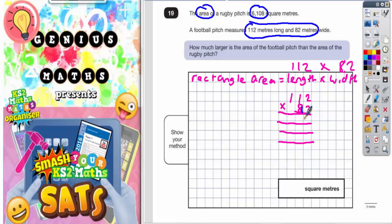First thing you do, you start with the two. Two twos are four, two ones are two. Put them together and we get 224. Now we need to times the 112 by the eight, but the eight doesn't just mean eight, it means 80 because the eight is in the tens column.